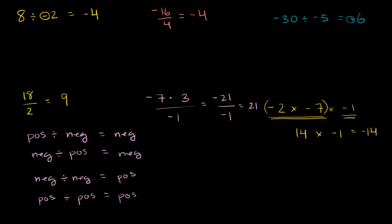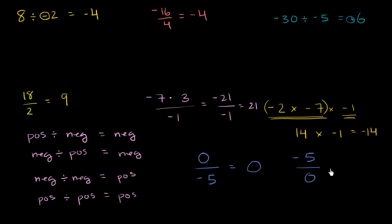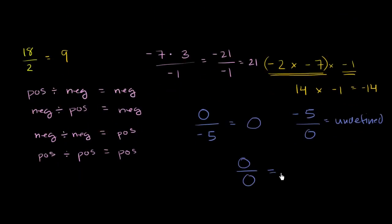Now let me give you a couple more trick problems. What would happen if I had 0 divided by negative 5? Zero divided by anything that's non-zero is just going to be equal to 0. What if we did it the other way around — negative 5 divided by 0? We don't know what happens when you divide things by 0; we haven't defined that, and there are arguments for multiple ways to conceptualize it. So we traditionally say this is undefined. And similarly, even 0 divided by 0 is still undefined.